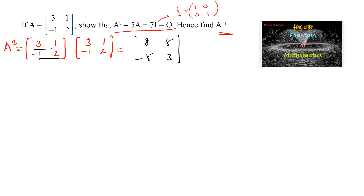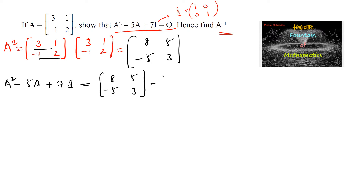So A squared equals [[8, 5], [-5, 3]]. Now let us consider A squared minus 5A plus 7I, which equals A squared [[8,5],[-5,3]] minus 5 times matrix A [[3,1],[-1,2]] plus 7 times identity matrix [[1,0],[0,1]].